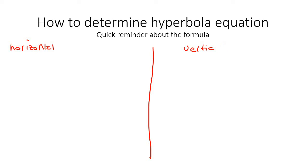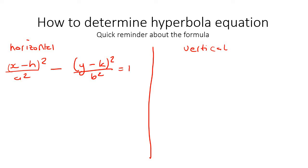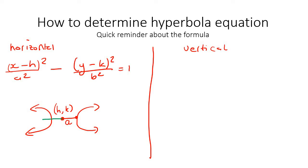In a horizontal, the formula goes like this: (x minus h) squared over a squared, minus (y minus k) squared over b squared, equals 1. A horizontal hyperbola looks like this, where this is the center h, k. The distance from the center to the vertex — you can go left or right — is the value a. And then the distance from the center to the foci is c.